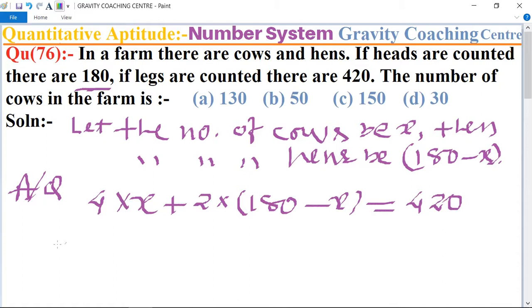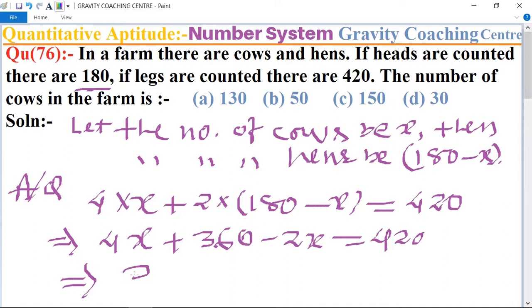So now we calculate: 4X plus 360 minus 2X equals 420, which implies that 2X equals 420 minus 360.